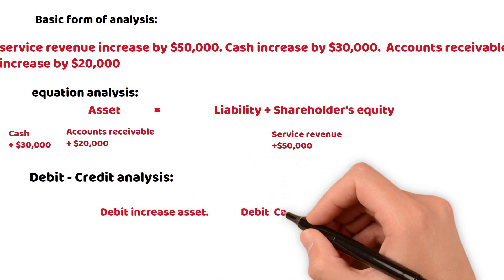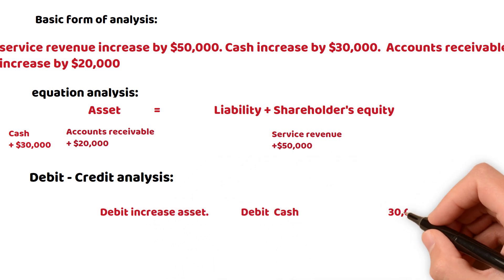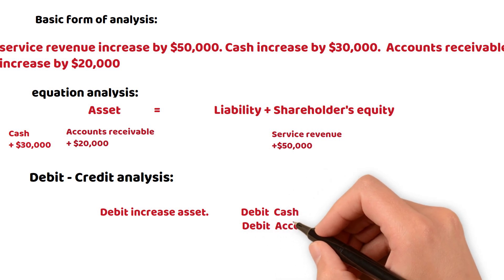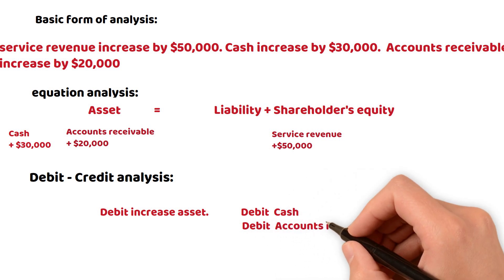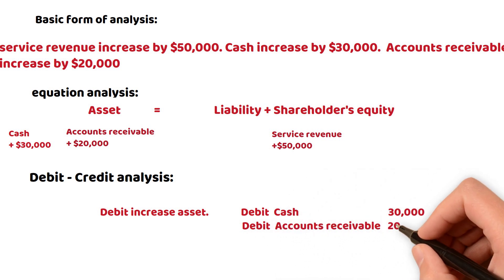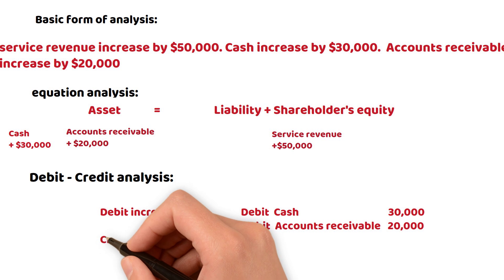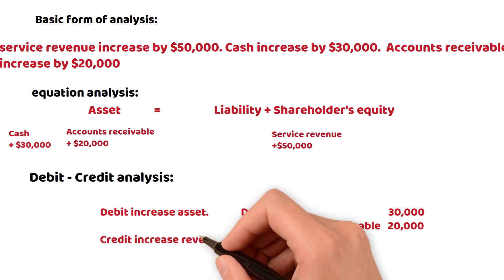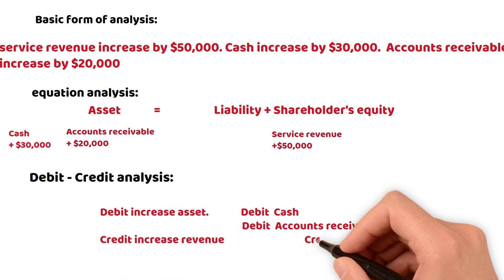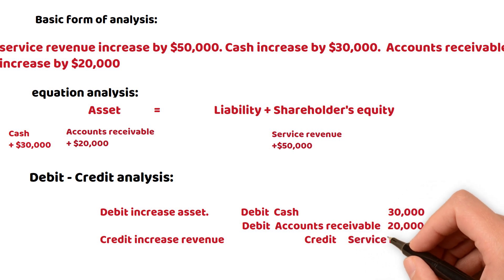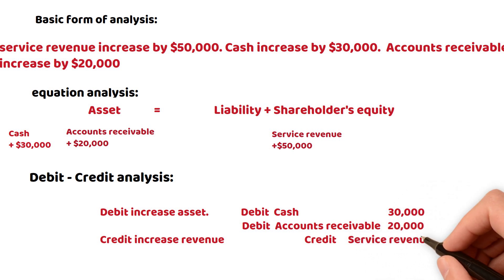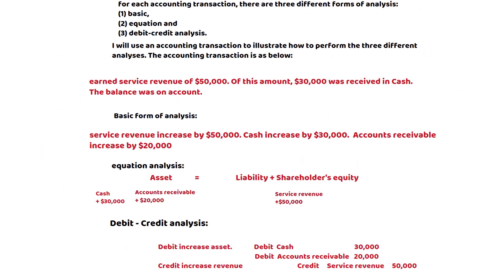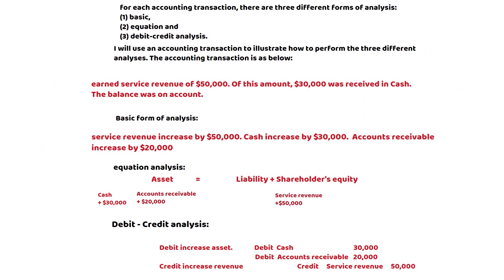Let's take a look at the debit-credit analysis. Debit increases asset: debit cash and debit accounts receivable — together that's fifty thousand. Credit increases revenue: credit service revenue for fifty thousand. Debit equals credit. That's it for this video, thank you for watching.